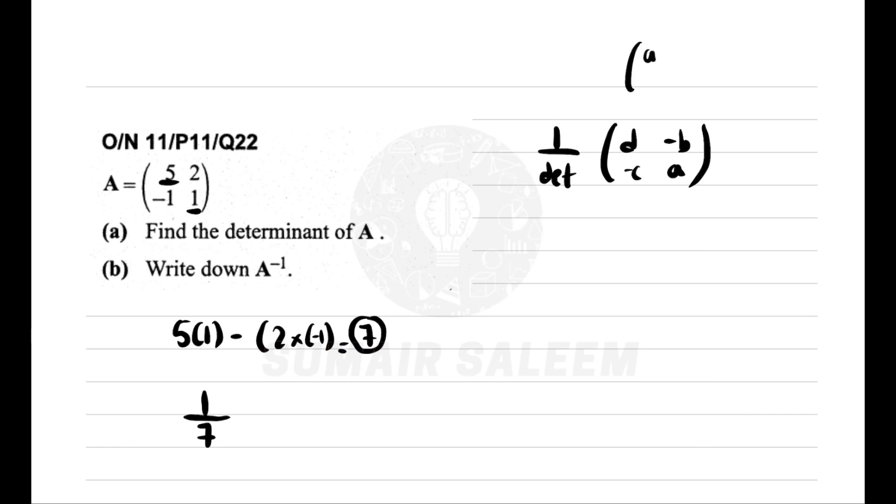How will you write down the inverse? 1 upon determinant, which is 7. Switch A and D positions: 5 and 1 become 1 and 5. And change BC signs: plus 2 becomes minus 2, and minus 1 becomes plus 1. If the question only asks for inverse, you can leave your answer at this point.